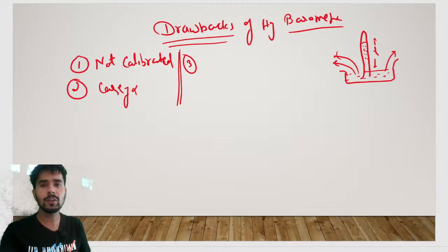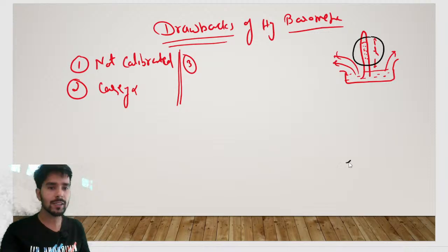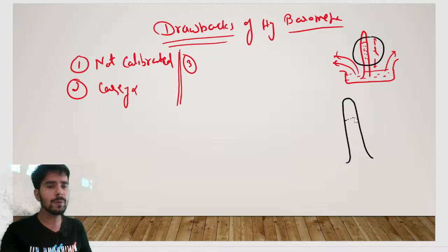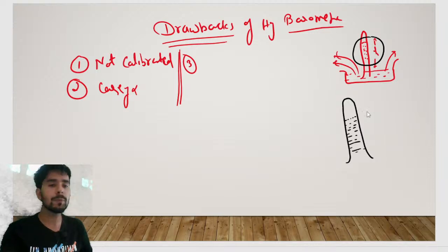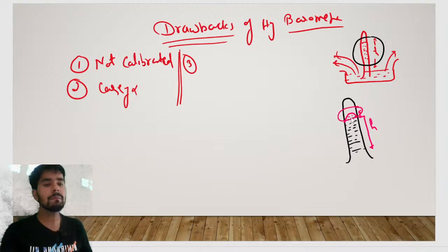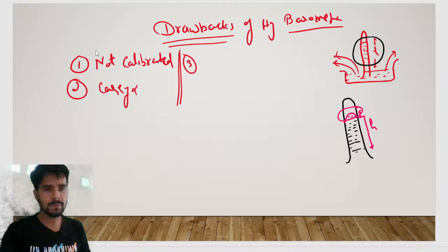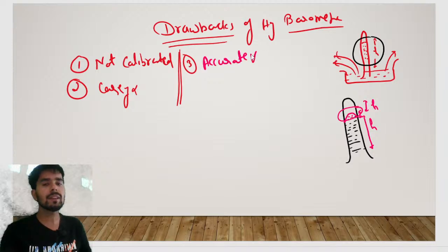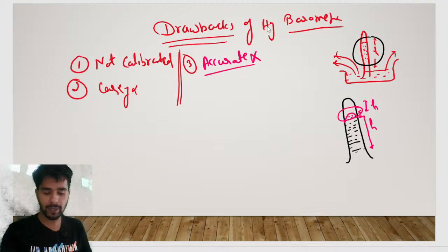The third drawback: if you look closer into the column, you will see that the mercury level is not straight. The mercury surface is curved — this is the meniscus. So there is an extra height at the edges which we cannot measure with a simple mercury barometer. Therefore, we will never get a completely accurate reading. These are the main drawbacks of the mercury barometer.